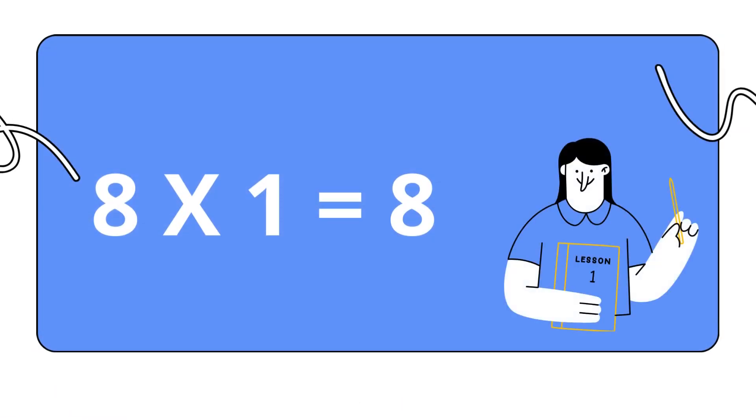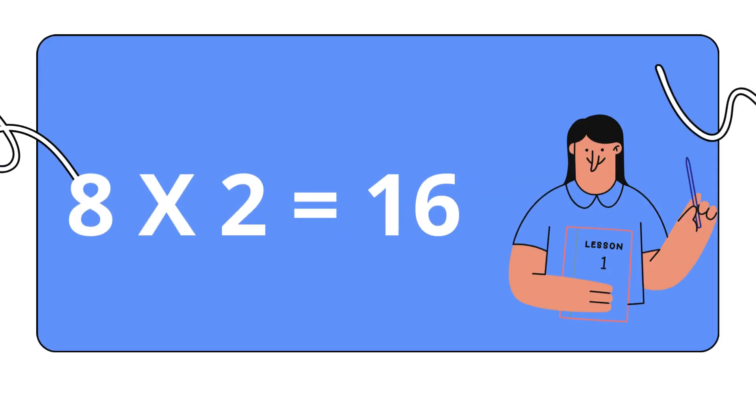Eight ones are eight. Eight ones are eight. Eight twos are sixteen. Eight twos are sixteen.